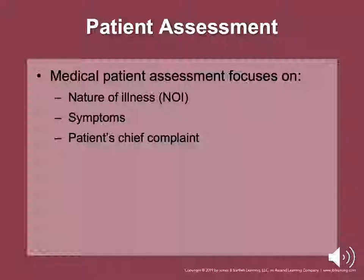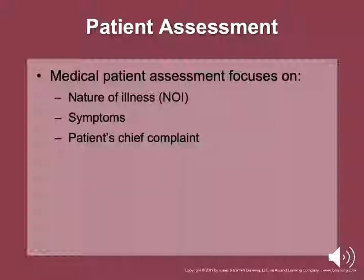Assessment of a medical patient is similar to that of a trauma patient but with a different focus. You need to get the nature of illness — you're not looking for a mechanism of injury. Get the patient's chief complaint, which can be very difficult to narrow down. Information received from dispatch can be helpful and prepares you for what you may find on scene. A traumatic injury can be a medical emergency or vice versa — be careful of tunnel vision. Don't get too focused on one thing and miss something else; do a 360-degree assessment.